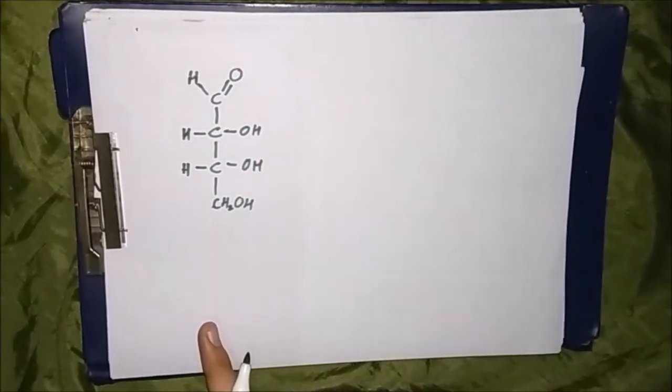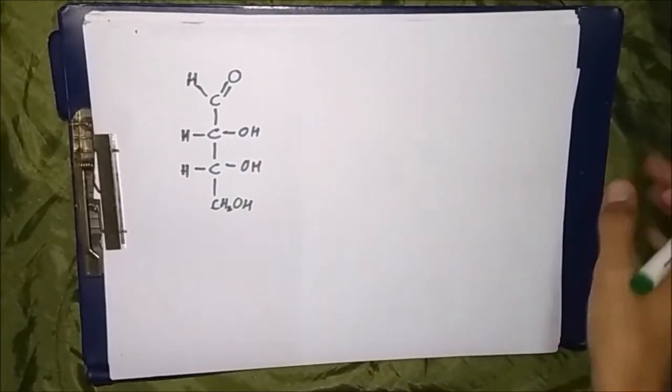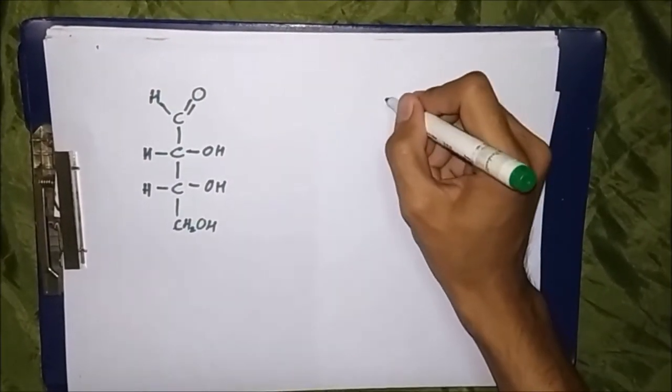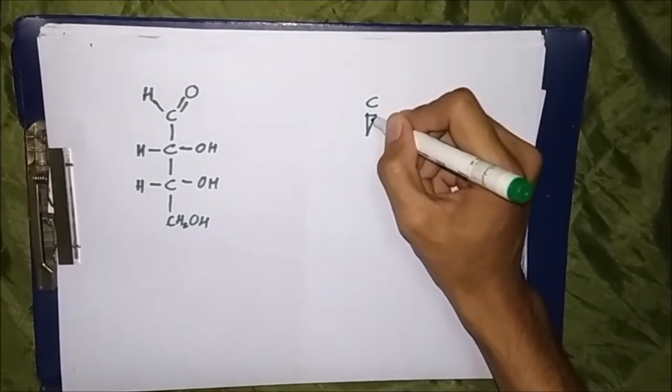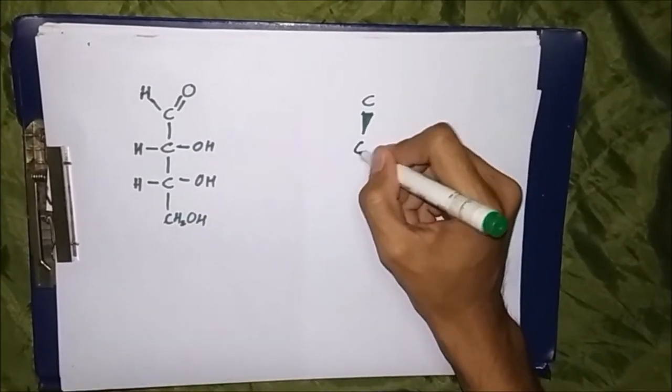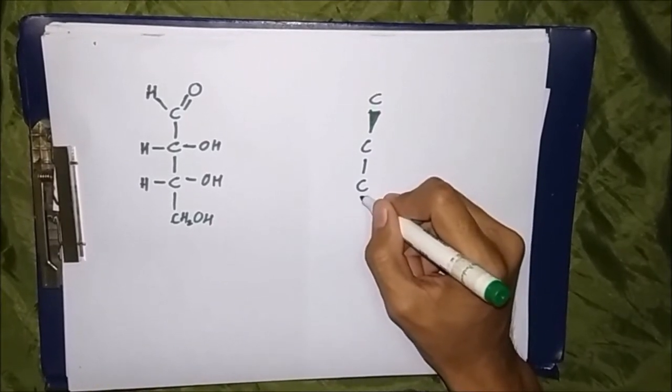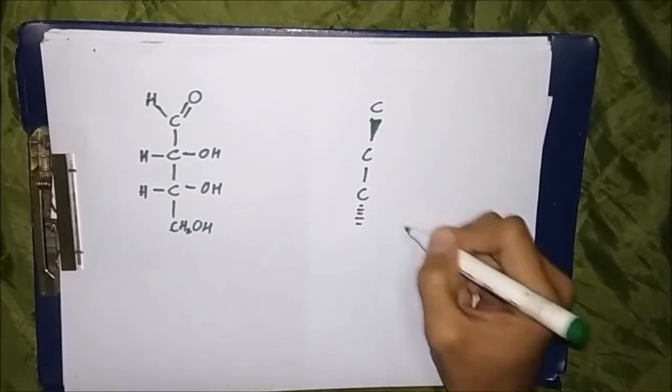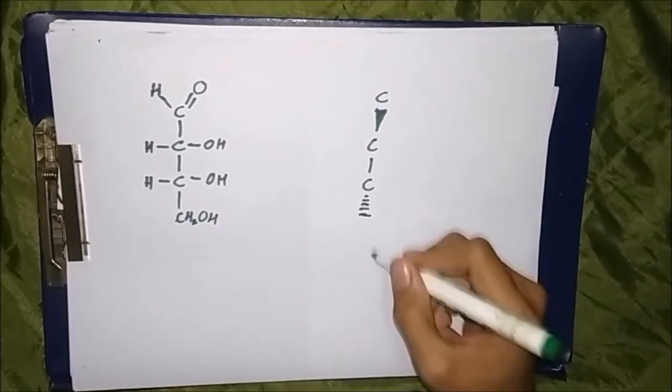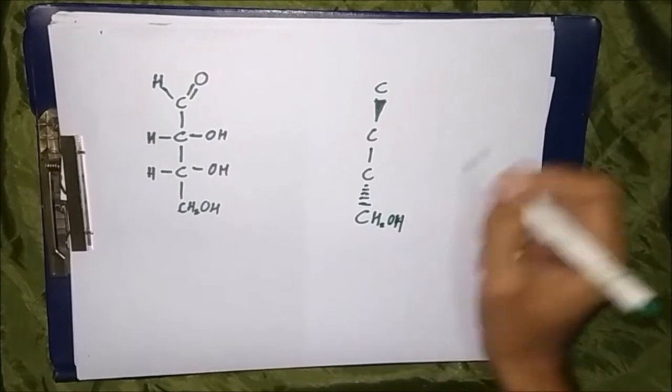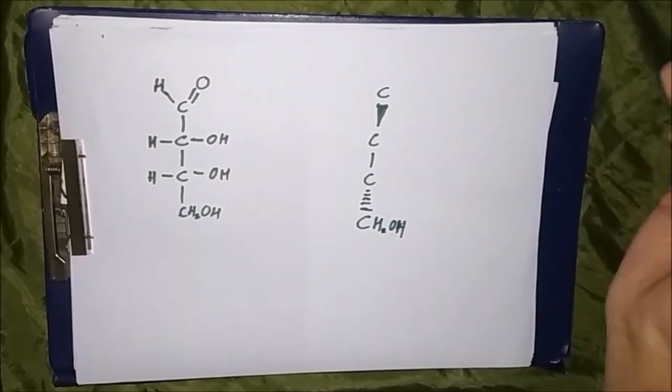Fischer projection was devised by Hermann Emil Fischer in 1891. It shows a two-dimensional representation of a three-dimensional organic molecule by projection. Here we have our 3D structure of the molecule, also known as a projection of a tetrahedral molecule onto a planar surface.